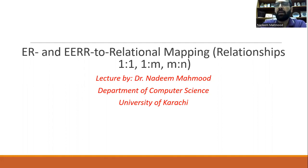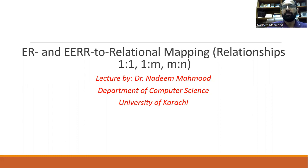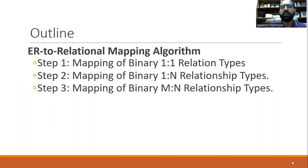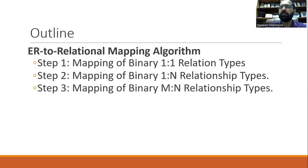We have primarily three relationships. The first is one-to-one, the second is one-to-many, and the third is many-to-many. Today we will discuss how we can apply various rules regarding these relationships. The outline covers three mapping types: mapping of binary relationship one-to-one, mapping of binary relationship one-to-N, and mapping of binary relationship M-to-N.